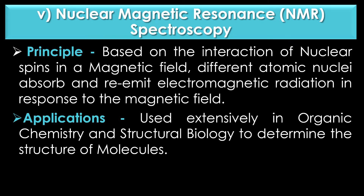The fifth type is nuclear magnetic resonance or NMR spectroscopy. Its principle is based on the interaction of nuclear spins in a magnetic field. Different atomic nuclei absorb and re-emit electromagnetic radiation in response to the magnetic field. NMR spectroscopy is used extensively in organic chemistry and structural biology to determine the structure of molecules.